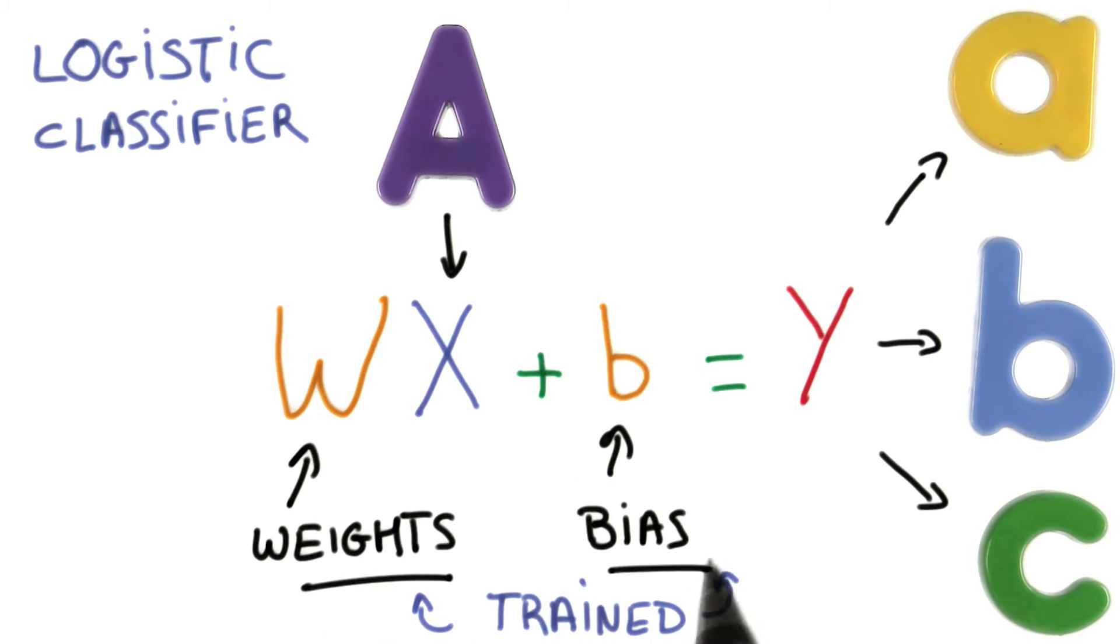The weights of that matrix and the bias is where the machine learning comes in. We're going to train that model. That means we're going to try to find the values for the weights and bias which are good at performing those predictions.